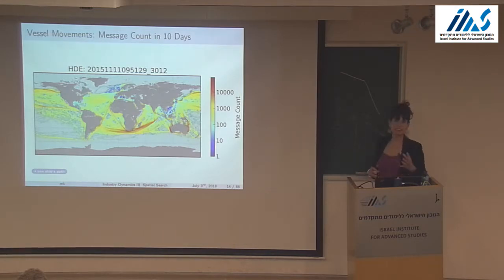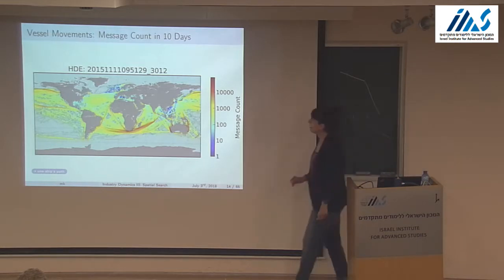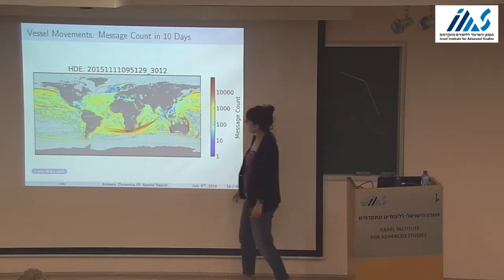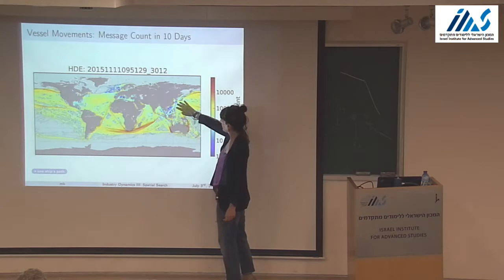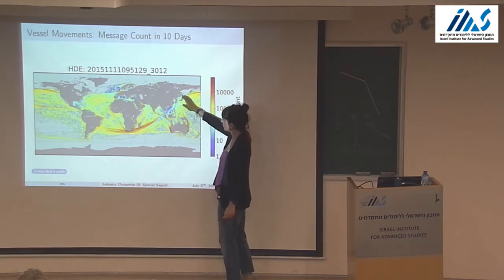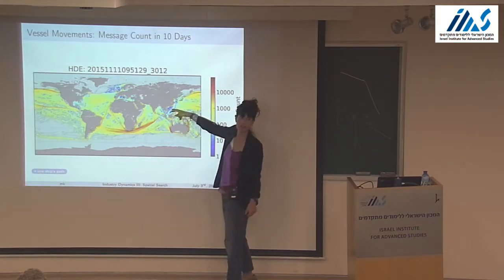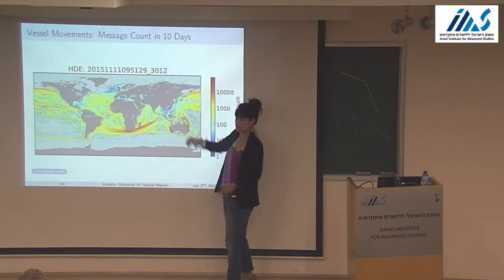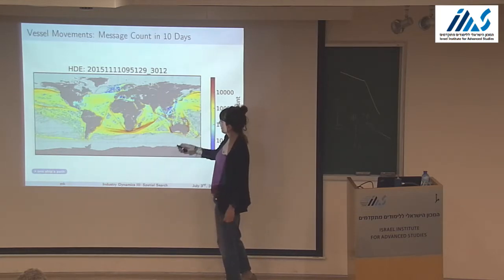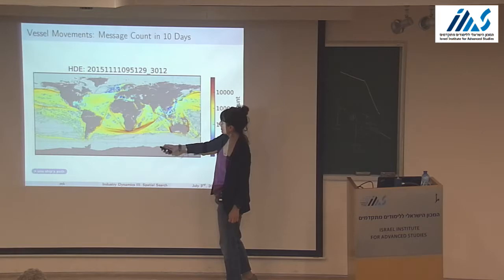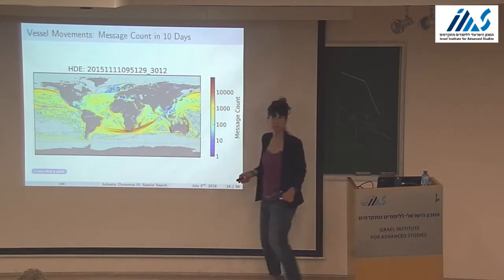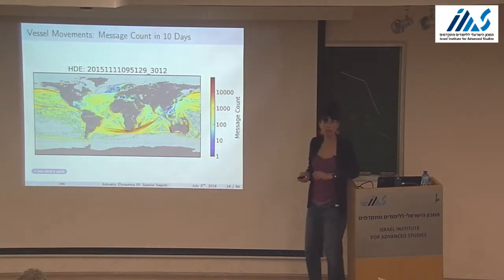This is a snapshot of 10 days in our dataset, showing all messages received from ships. You can see how central China is — there are a lot of routes leading to China: Australia to China, Brazil to China, and the U.S. Northwest is also a region exporting a lot to China.